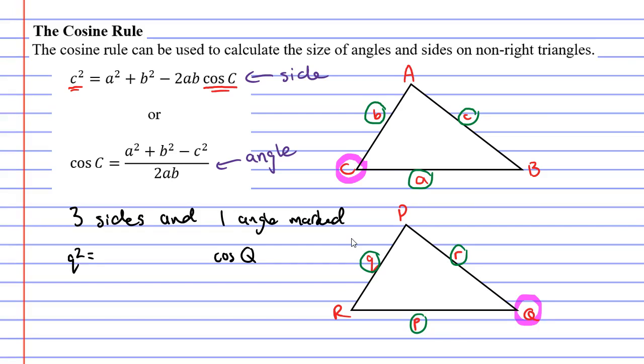What were the other two sides we had here? We had lowercase r and lowercase p. They would replace a and b. So we would have p² + r² - 2pr cos Q. Alright, so this is the formula we would use to calculate the length of side q.